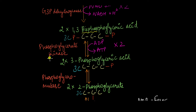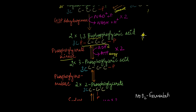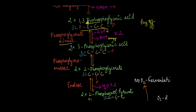The enzyme phosphoglycerate kinase — again, a kinase is involved — takes one of these phosphate groups, adds it to ADP, and converts ADP to ATP. So from two molecules of 1,3-bisphosphoglyceric acid, we get two molecules of ATP. This phase where ATP and NADH are produced is the payoff phase of glycolysis. Because one phosphate group is removed, the resultant product is two molecules of 3-phosphoglyceric acid.